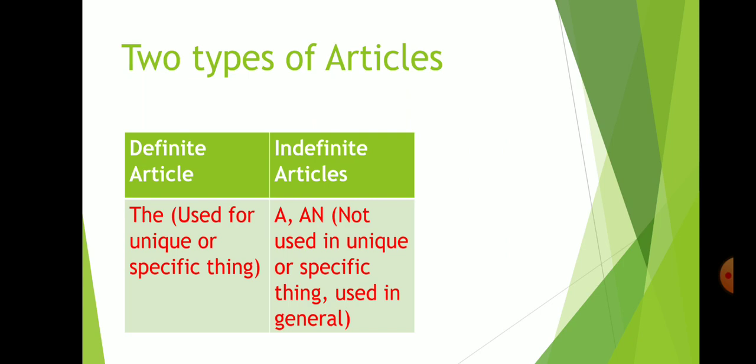Definite articles is the, which is used for unique or specific thing. Indefinite articles, a and an, not used for unique or specific thing, but used in general.